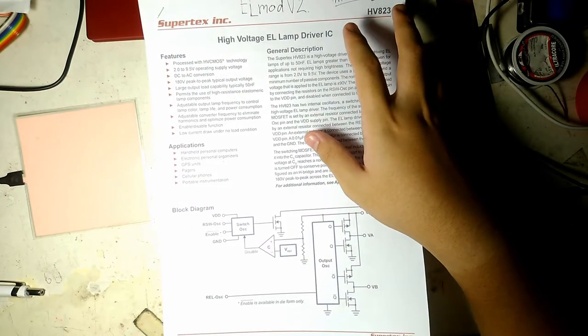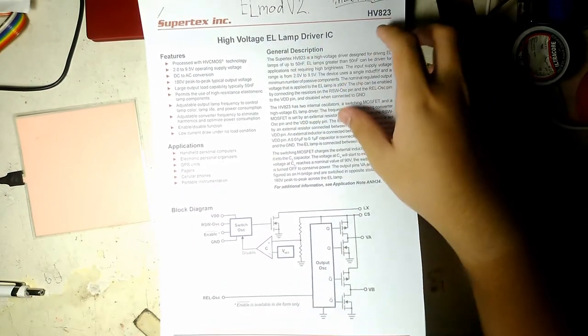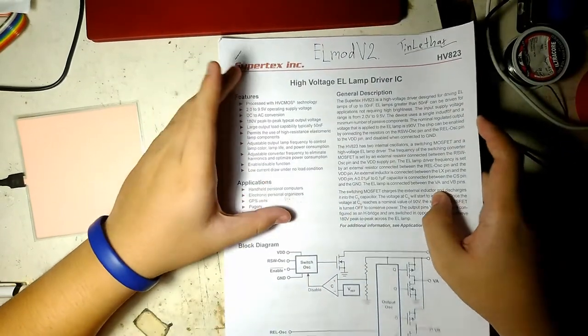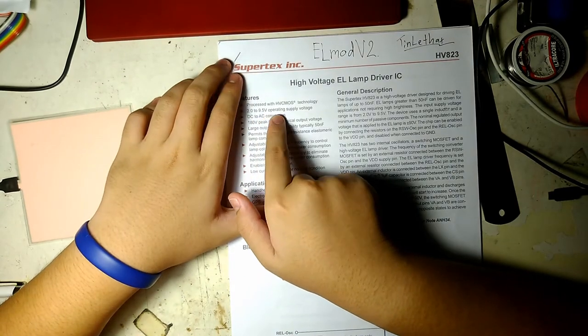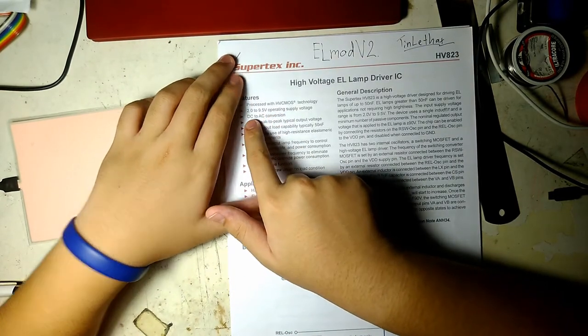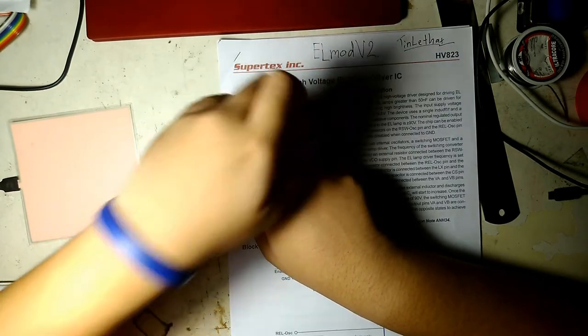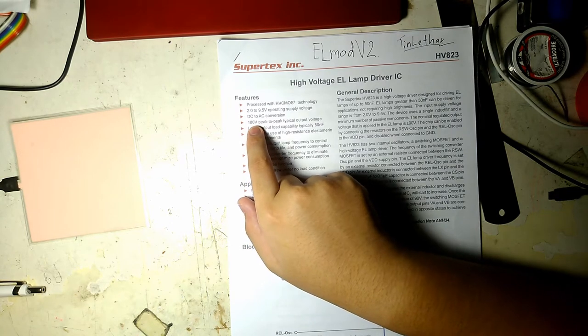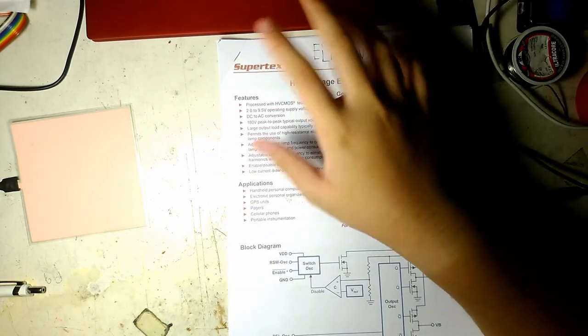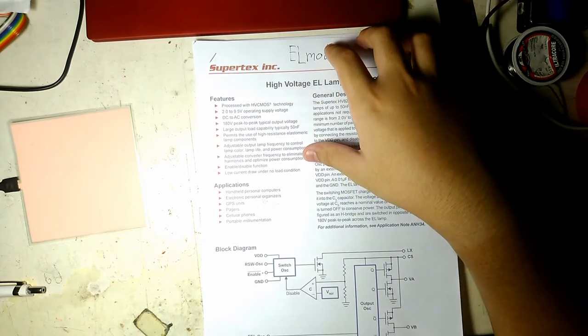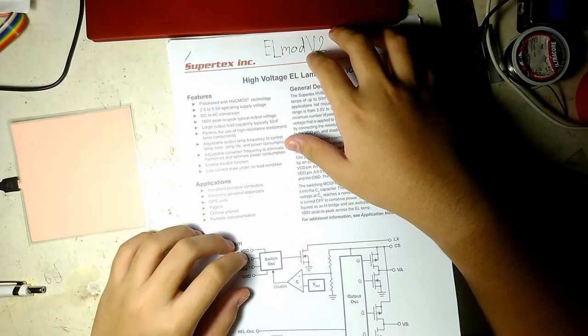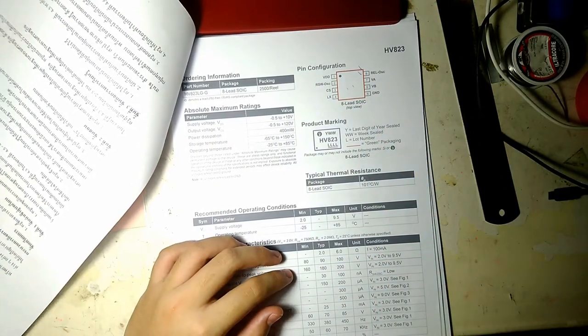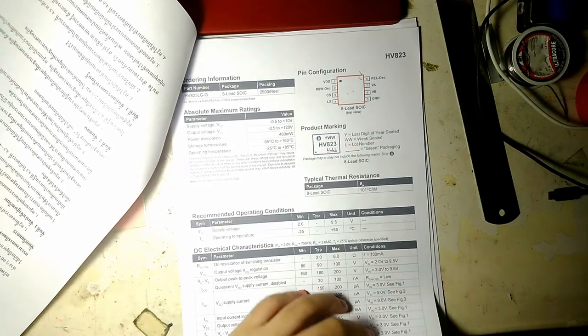It's a principle similar to a boost converter. You have an inductor, you have a switch. You can just Google it online right now, search for boost converter. Back to our subject, we have a driver IC with 2 to 9.5 volt operating supply voltage. It's actually a DC to AC converter with 180 volt peak-to-peak output voltage.